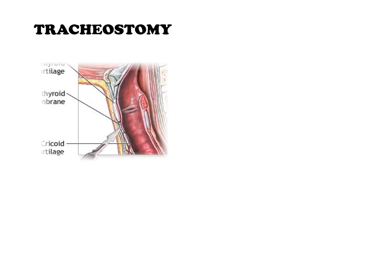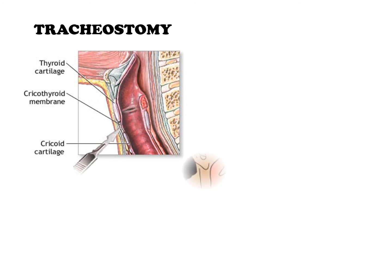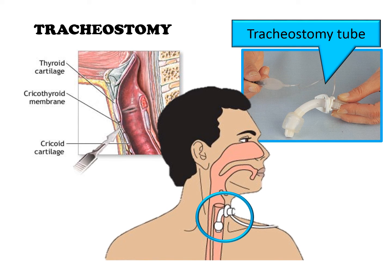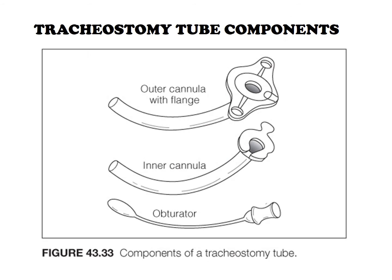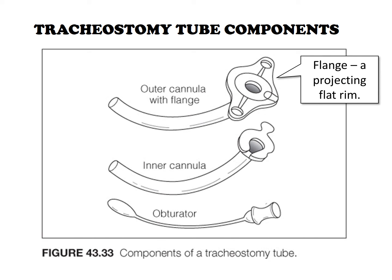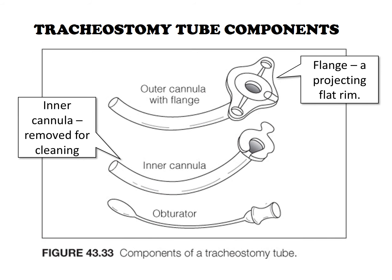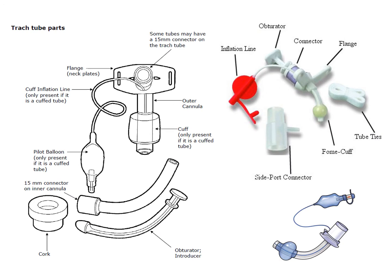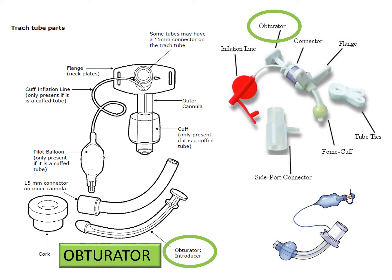A tracheotomy is a surgical incision into the trachea below the larynx. A tracheostomy is the opening formed when long-term assistance to maintain airway patency is required. A tracheostomy tube is inserted to stabilize the opening, and a tracheostomy may be temporary or permanent. The tracheostomy tube may be plastic or metal, although metal tubes are increasingly uncommon. The tube has an outer cannula with a flange that rests against the patient's neck and prevents the tube slipping into the stoma. It has a removable inner cannula which can be removed for cleaning, and an obturator is required for reinsertion of the outer cannula should it become dislodged.